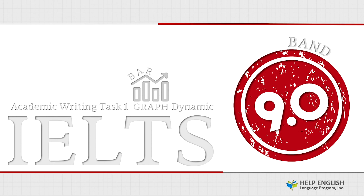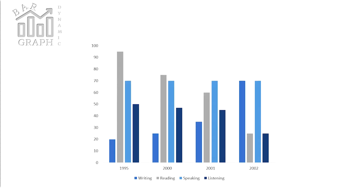Hello everyone, today we will practice how to write a bar graph report with a band score of 9.0, with comparison to a bar graph report with a band score of 6.0. This bar graph is dynamic, but if you also want to practice bar graph static, you can check the link below. Writing a report for a bar graph dynamic with a band score of 9.0 is similar to writing a line graph because dynamic graphs show data over time, so there are trends, movements, and changes.